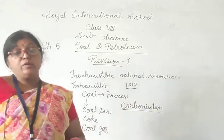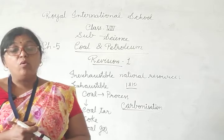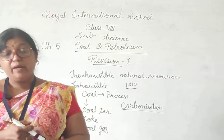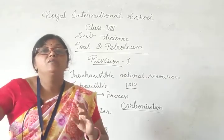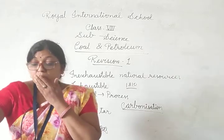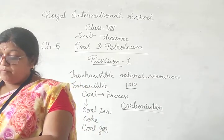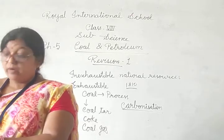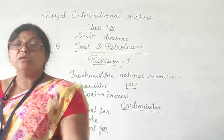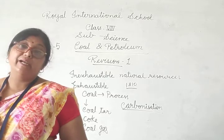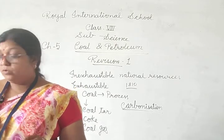Types of coal — coal bhi kai type ki hoti hai, char taray ki hoti hai: peat, lignite, bituminous, and anthracite. Different variety of coal depends on how long and at what temperature and pressure the vegetable fossils are buried under the surface of the earth. Jitna jyada time liya, jitna jyada pressure tha, jitna jyada temperature tha, the more carbon content in it. Coal varieties differ in carbon content and moisture.